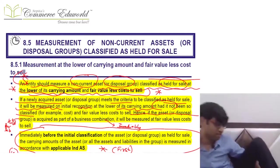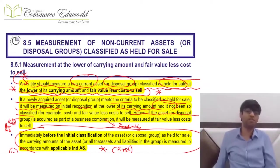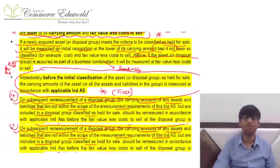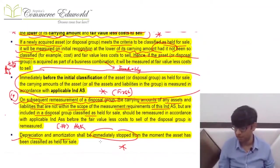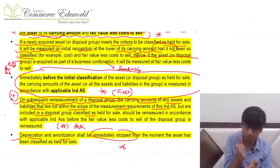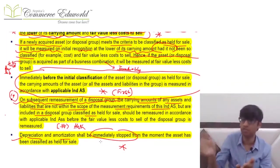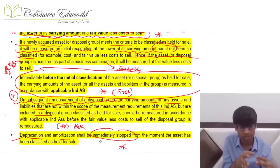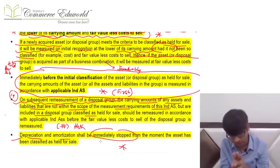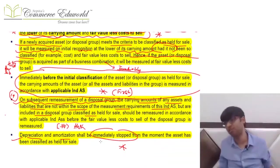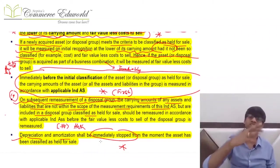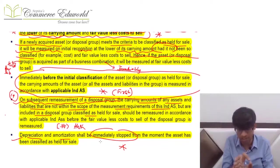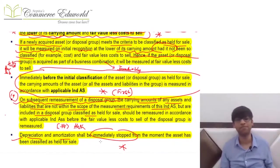For a non-current asset normally used in the business, before applying IND AS 105 (held for sale accounting), kindly apply all other applicable standards such as IND AS 16 and 36. Get the carrying amount as per those standards as on the date of classification as held for sale, and then apply IND AS 105.